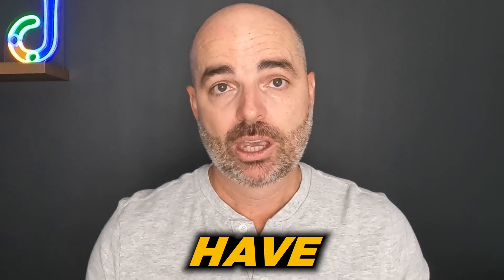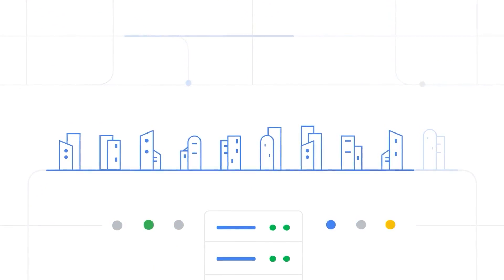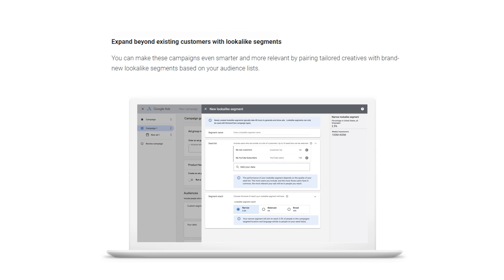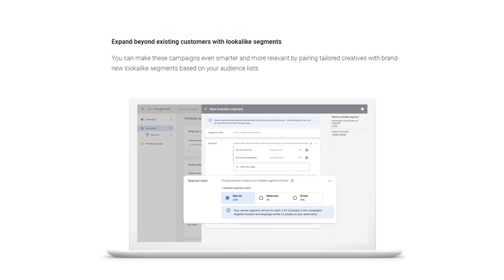The second key driver for Demand Gen is that you will need to have great audiences to start with. You can start without audiences, but the more data you can initially feed into Google Ads, the faster you'll get results. When Google made its announcement back in May, it said that Demand Gen would focus on look-alike audiences and your existing customers. The more data you can give Google upfront, the quicker it can create those look-alike audiences and the more accurate they will be.